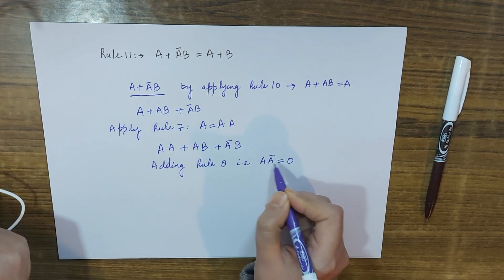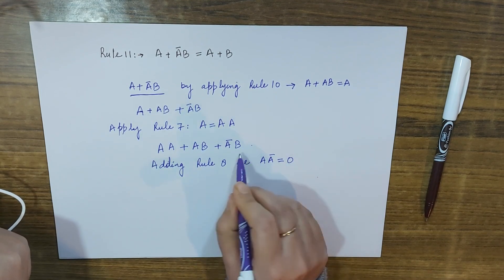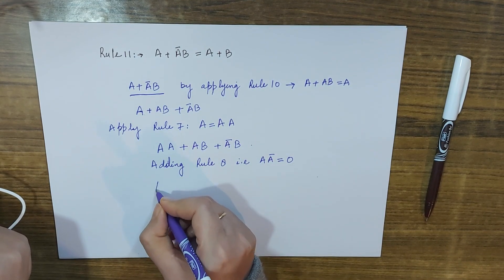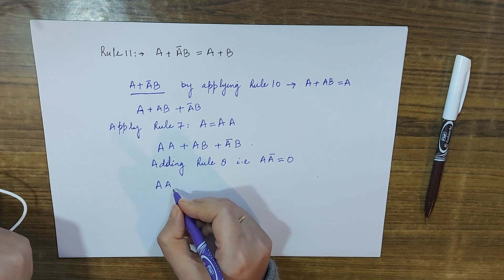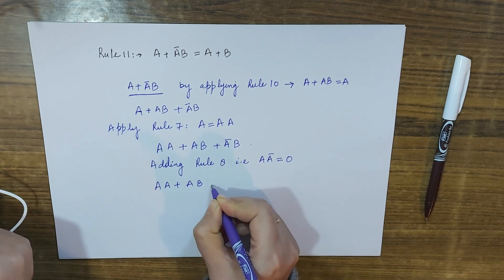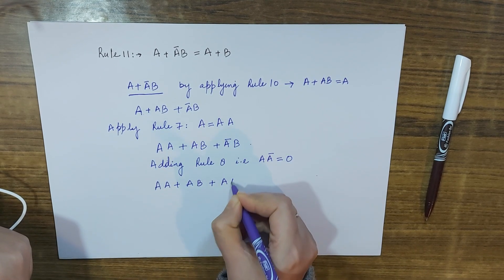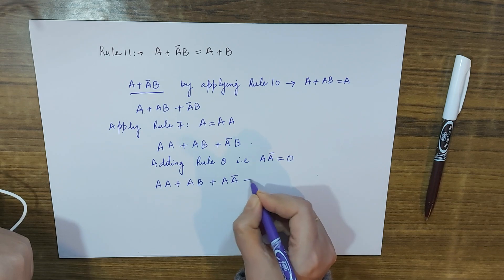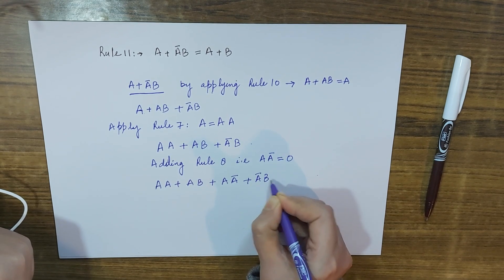Adding A·A-complement — which equals 0 — makes no difference. The whole expression is now written as: A·A plus AB plus A·A-complement plus A-complement B.